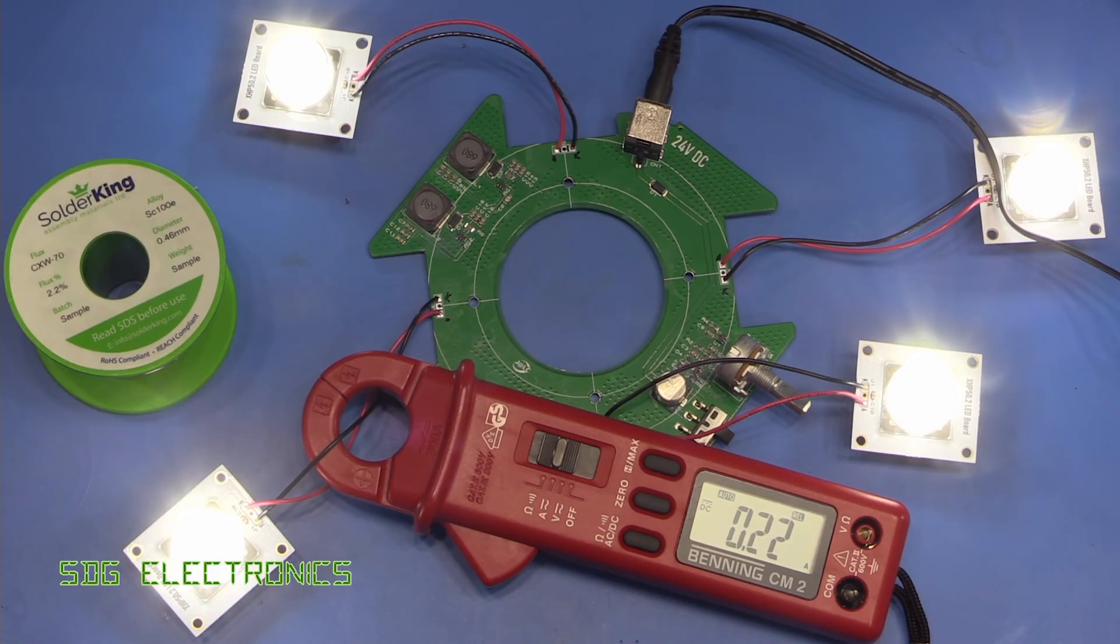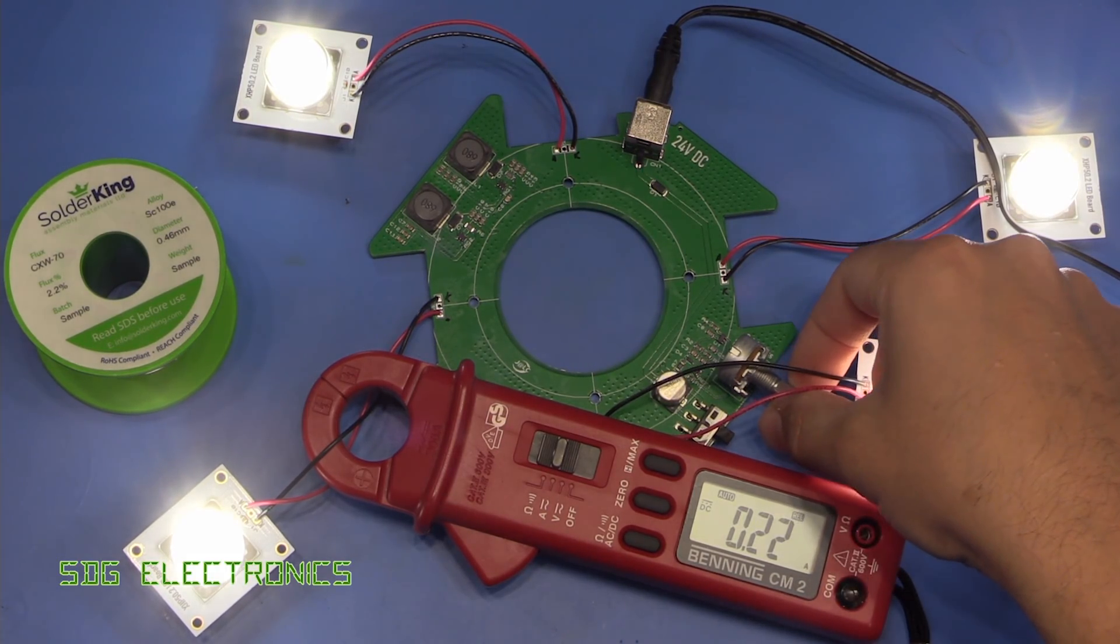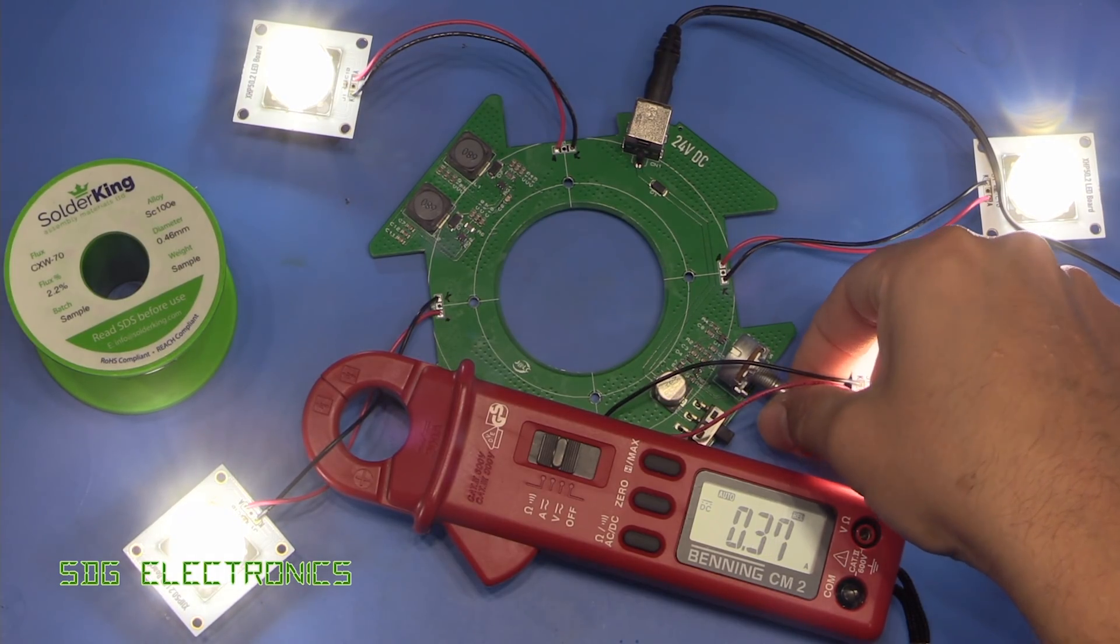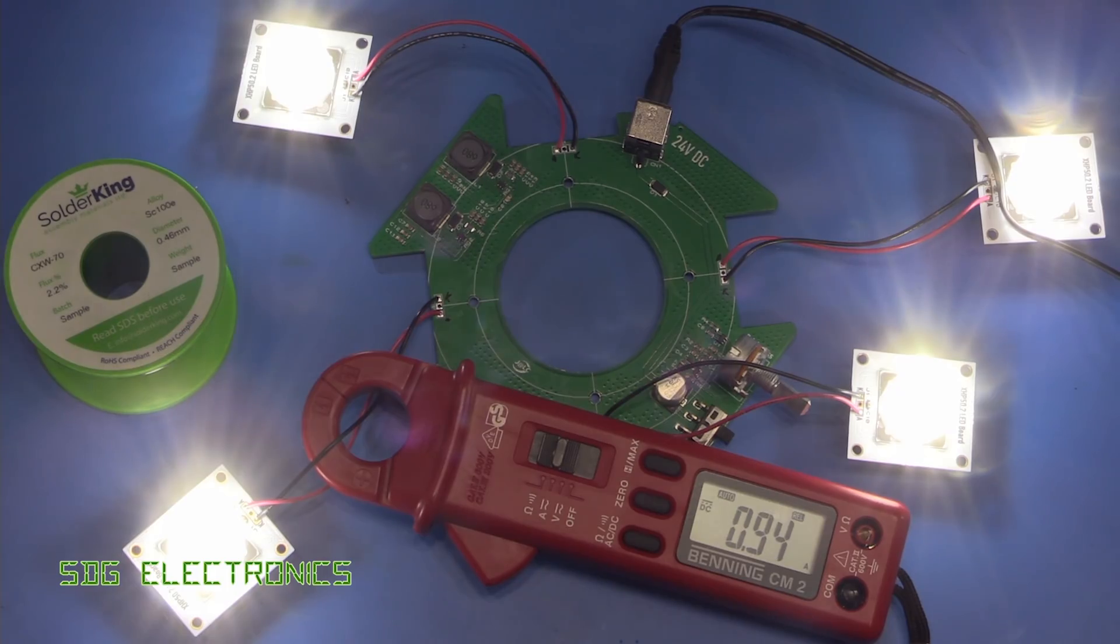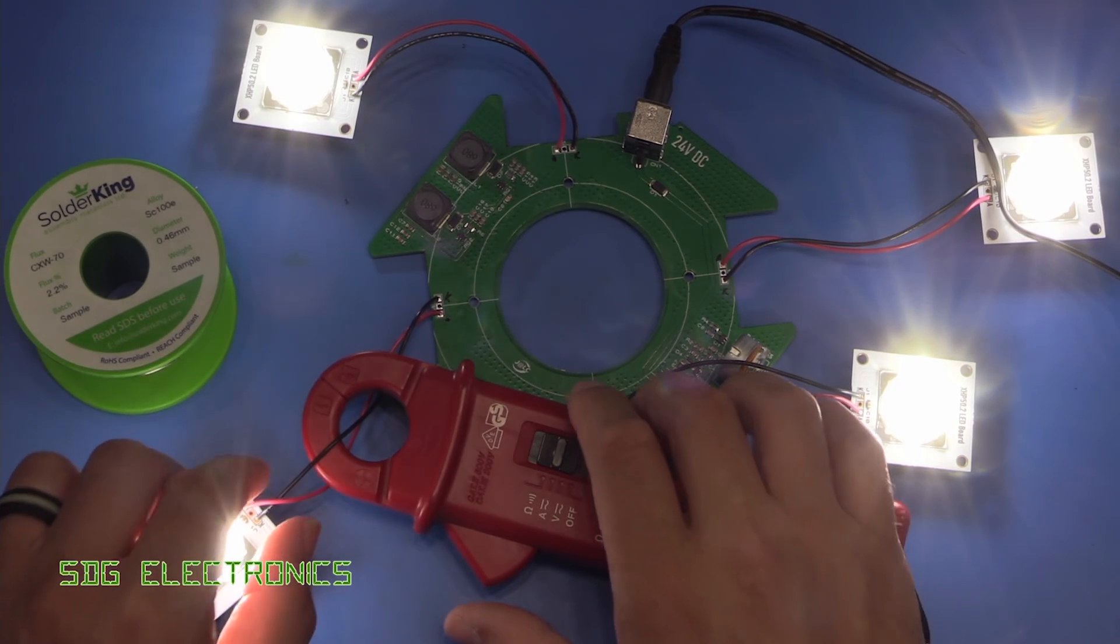So let's turn it on and see what happens. So about 0.23 amps. That's at minimum brightness. Let's increase that up to the maximum.